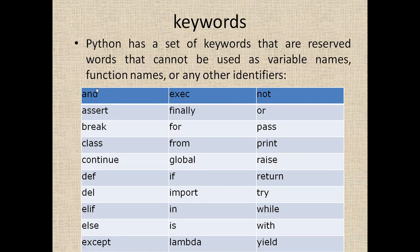Keywords are reserved words that have a specific, fixed definition in Python. Some examples of keywords are 'and', 'break', 'for', and 'as'. They are called reserved words because each keyword has a different, predefined meaning in Python, and you cannot use them as a variable name, function name, or class name.